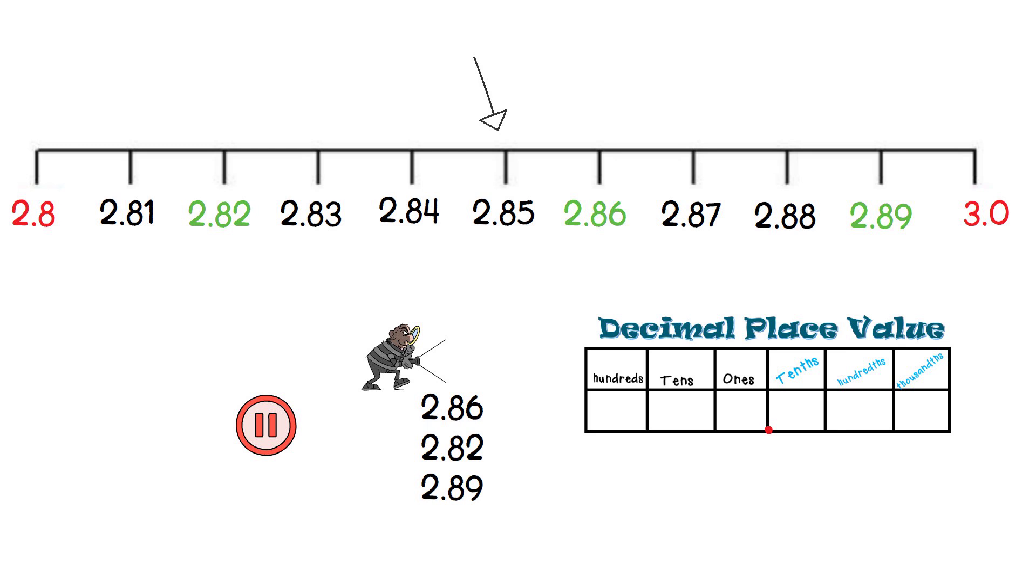Using the same number line, let's add another digit to these numbers. Where would 2.867 be located? 2.823 and 2.899. You see that we added one more digit in the thousandths place.